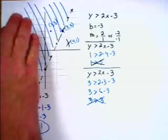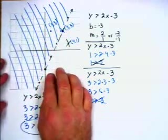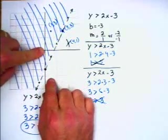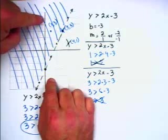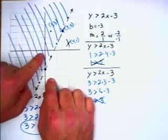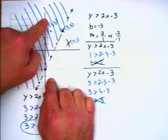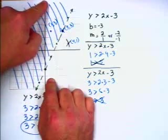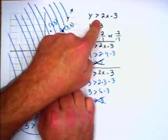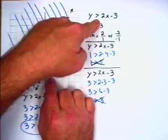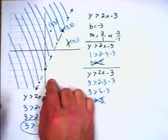How about above or below? If we look on the y-axis, the numbers are getting greater as we move up. The problem says y is greater, so we shade where y is actually getting greater — that is, above the line.